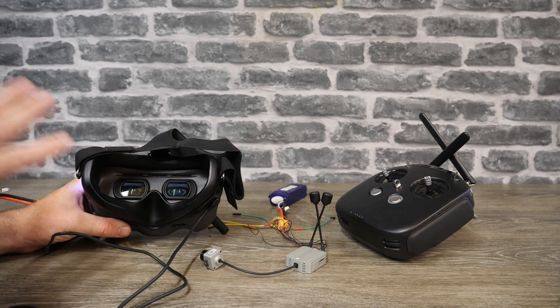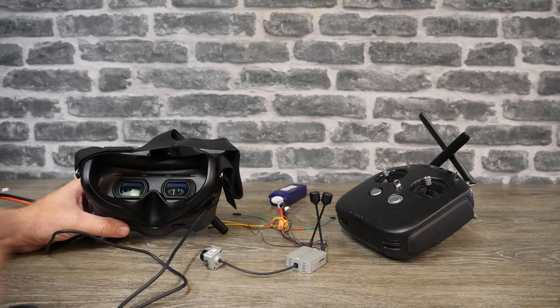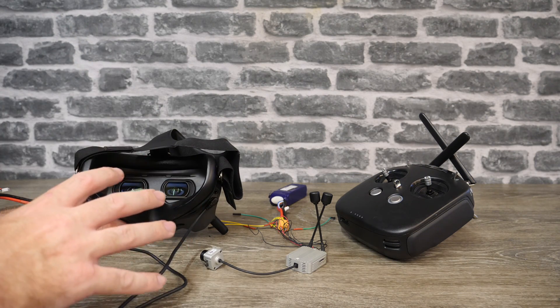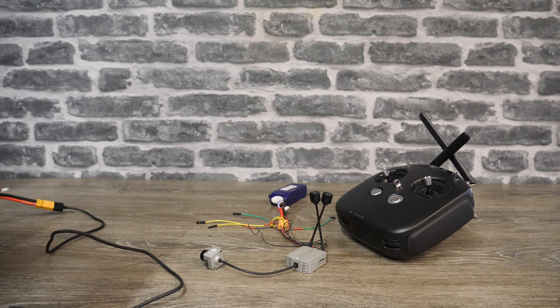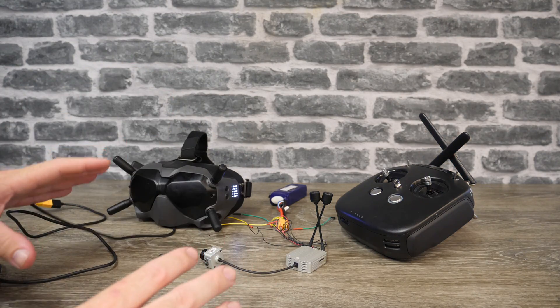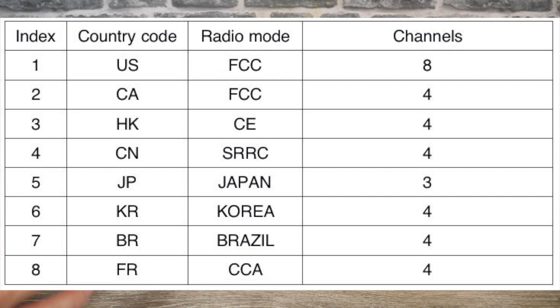Once it boots up you may notice that it says 'lost signal' and 'jumped to public channel' — what that means is it has actually read the file on the SD card and changed it. If I now go back into the goggles and into the player menu, you can see that I have all eight channels available to select. When you are in CE mode you will only have four channels; when you move into FCC mode you will have eight channels, so seeing eight channels confirms you have moved it into FCC mode.